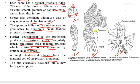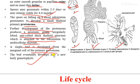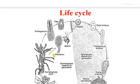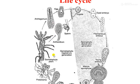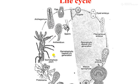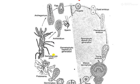A single bud develops from the marginal cell of the primary protonema, and this bud will develop into a leafy gametophyte. That was the development of the new gametophyte in Sphagnum. Now let's look at the life cycle.